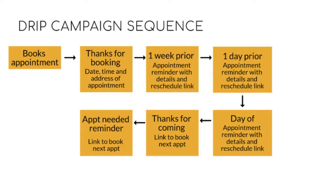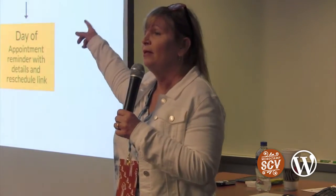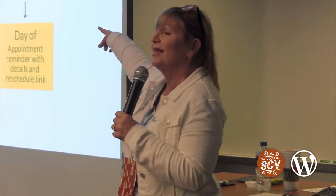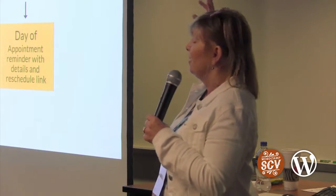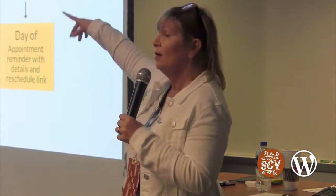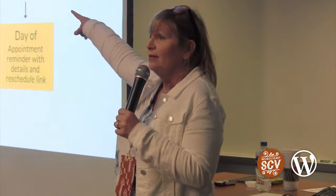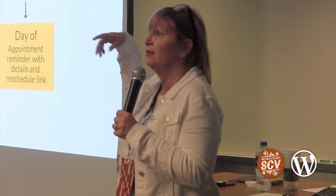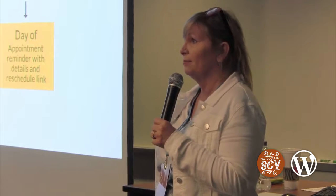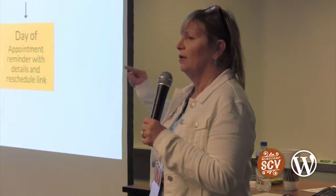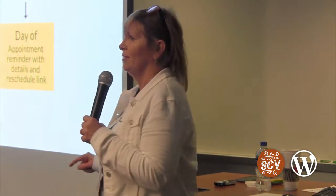Here is a Drip campaign sequence — notice it is very linear, super linear, no branching movement. If you were a hairdresser: somebody books an appointment, you send a transactional email — thanks for booking, with the time, date, and address. One week prior, you remind them of the appointment with the same info plus a reschedule link, because you can plan your workload better if they reschedule instead of just not showing up.